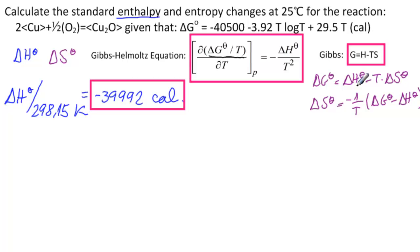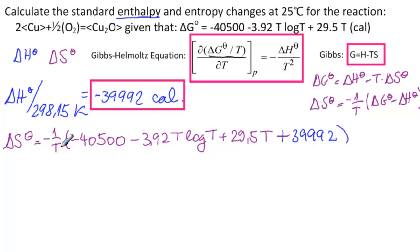So we substitute everything we have at the temperature of 298.15 Kelvin. Delta S theta equals minus 1 over T times minus 40,500 minus 3.92 T log T plus 29.5 T. This minus here times that minus there becomes plus 39,992. So this is going to be calories over Kelvin.